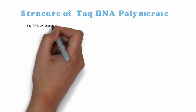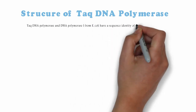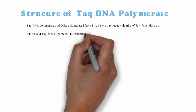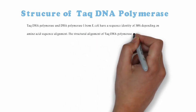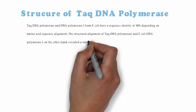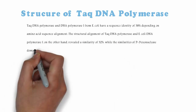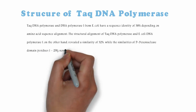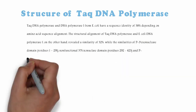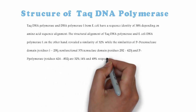Taq DNA Polymerase and DNA Polymerase I from Escherichia coli have a sequence identity of 38% based on amino acid sequence alignment. The structural alignment of Taq DNA Polymerase and E. coli DNA Polymerase I revealed a similarity of 32%. The similarities of the 5' to 3' exonuclease domain (residues 1–291), non-functional 3' to 5' exonuclease domain (residues 292–423), and 5' to 3' polymerase (residues 424–832) are 32%, 14%, and 49%, respectively.